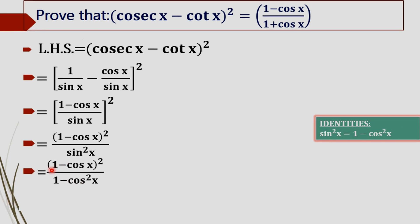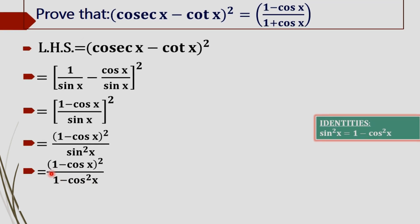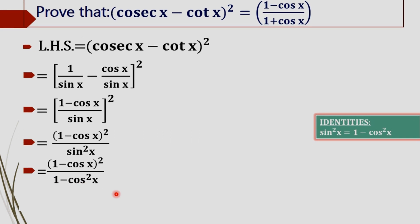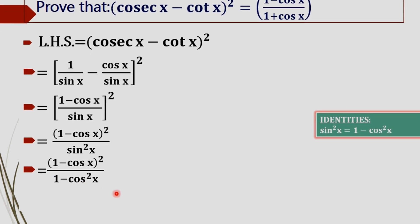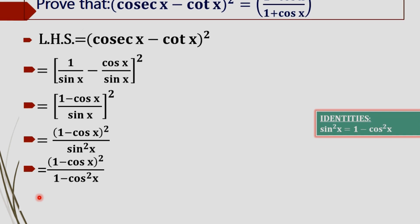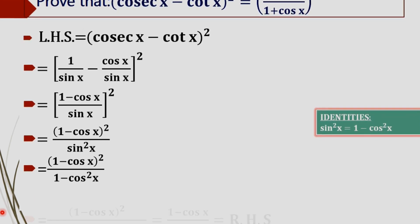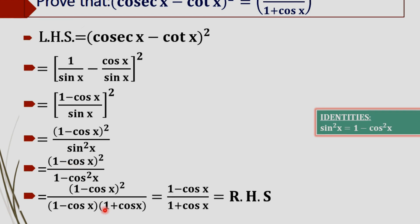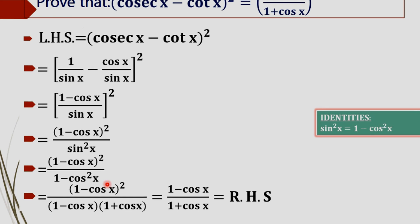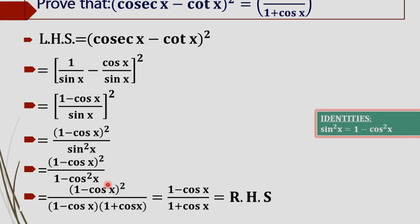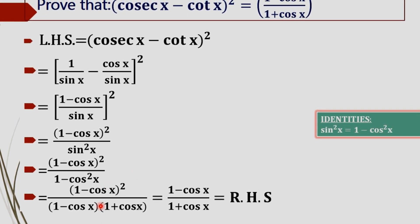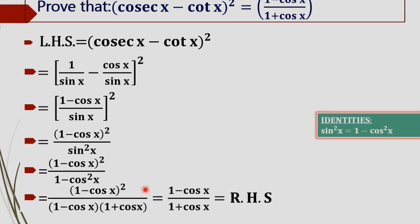Substituting that, we get (1 minus cos x) whole square divided by (1 minus cos squared x). Now, 1 minus cos squared x equals (1 minus cos x) into (1 plus cos x), using the identity a squared minus b squared equals (a minus b)(a plus b). We rewrite it as (1 minus cos x) into (1 plus cos x), then cancel (1 minus cos x) from numerator and denominator.